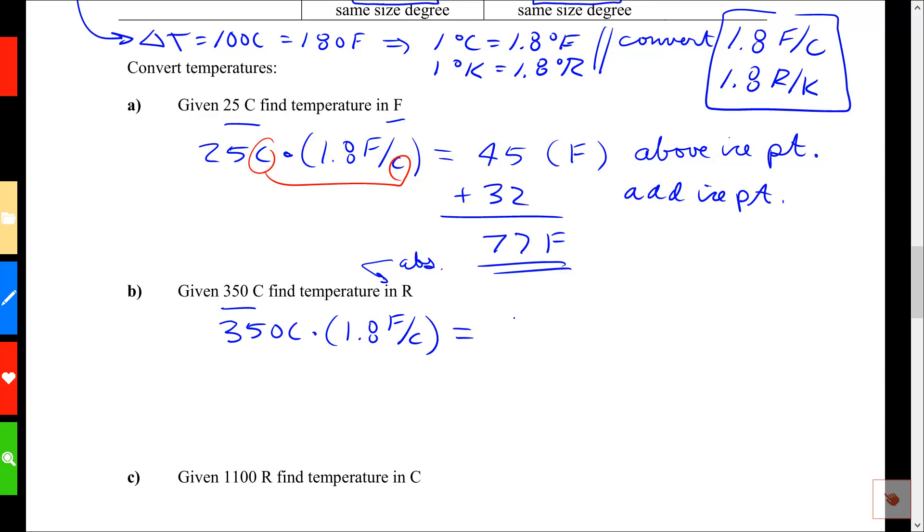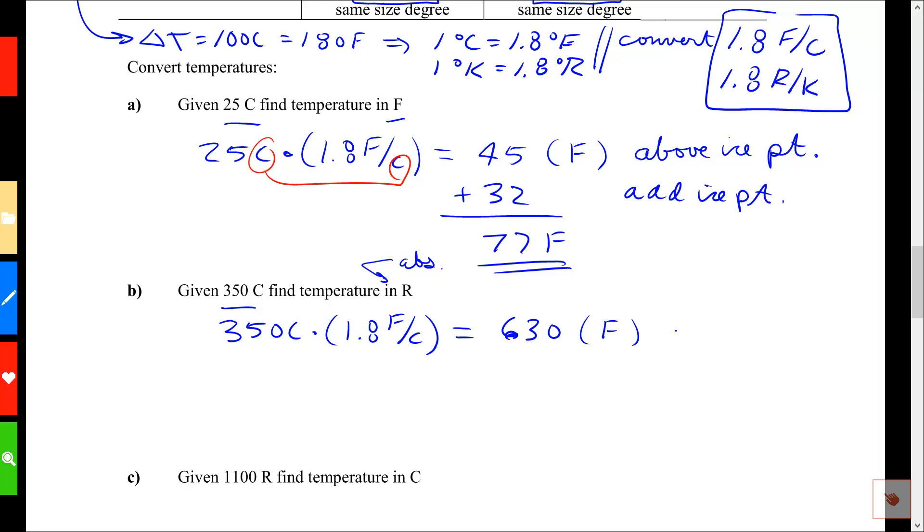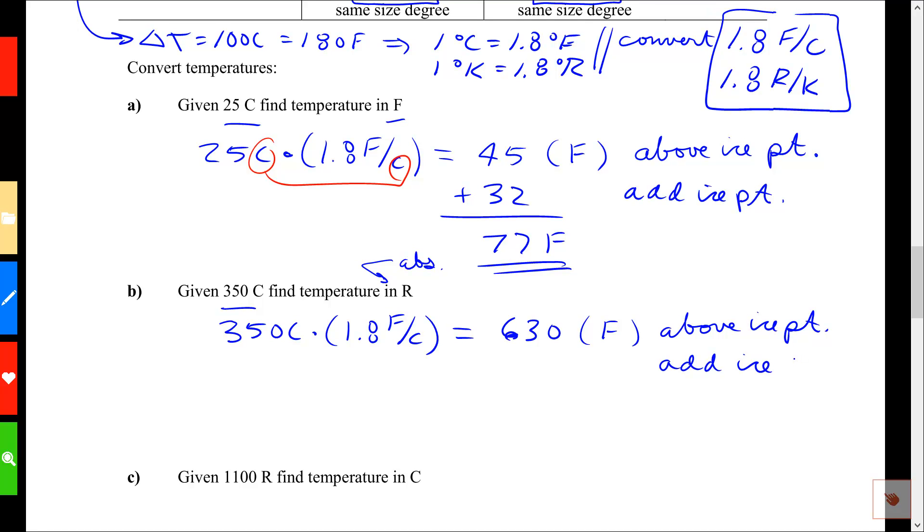When I crunch the numbers, that's 630. Again, I'm going to say that that's Fahrenheit, but in parentheses, because this is above the ice point. And I need to add the ice point to get the final system that I want. Add the ice point.